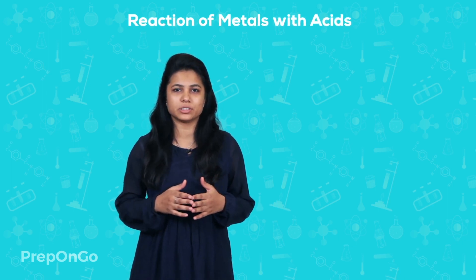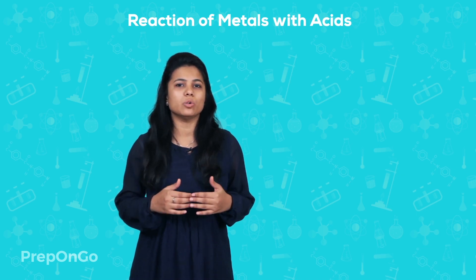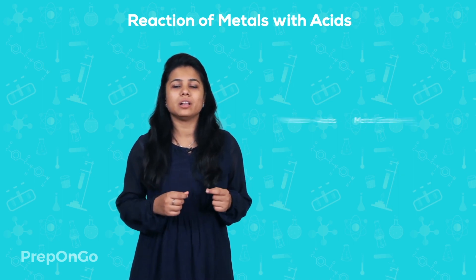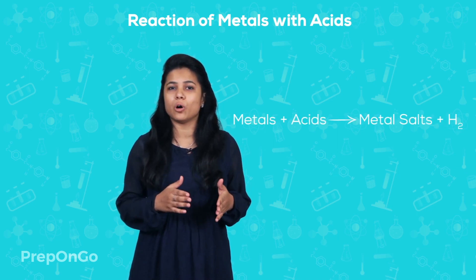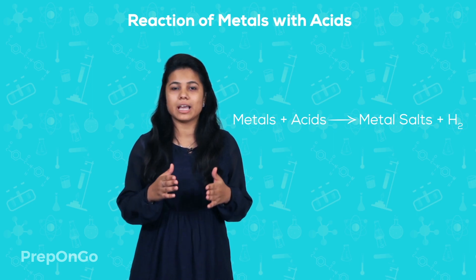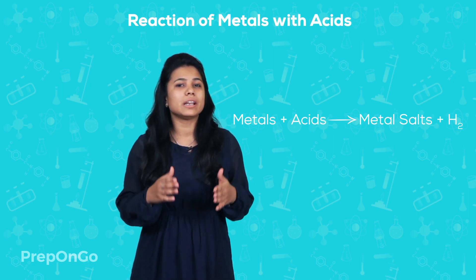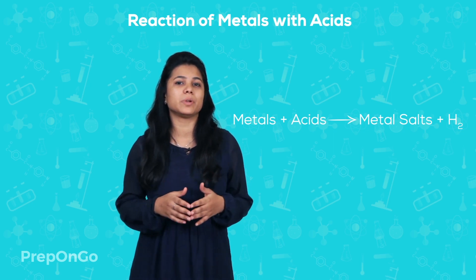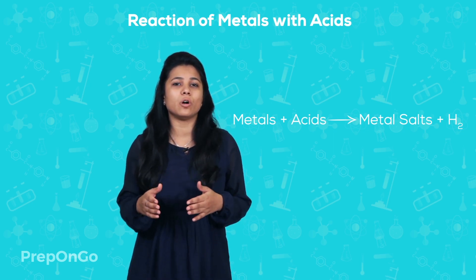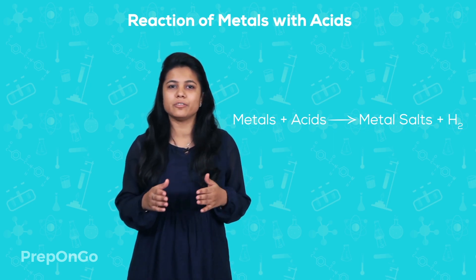Hello everyone. In the last video we had seen the reaction of metals with air and water. Now let's have a look at how metals react with acids. We already know that metals react with acid to form metal salts and hydrogen gas. But the rate at which hydrogen gas is produced and the heat evolved is different for each metal.